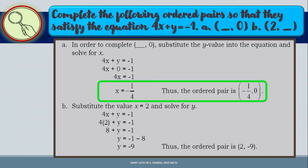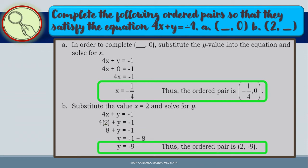For part (b), substitute x equals 2 and solve for y: 4 times 2 is 8, so y equals negative 1 minus 8, giving y equals negative 9. Thus the ordered pair is (2, negative 9).